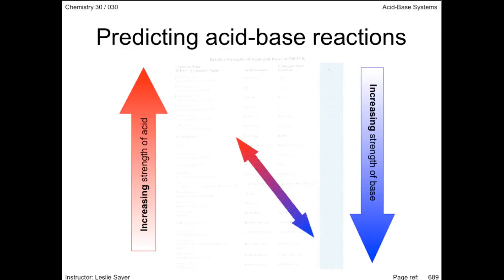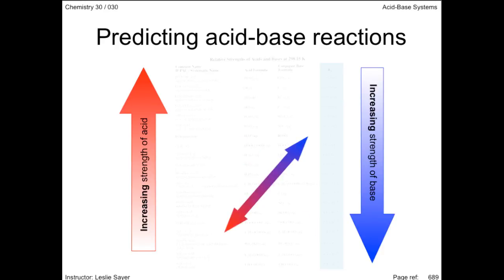A directional arrow in the top-left to bottom-right orientation indicates the acid reactant is above the base reactant and products are favored. The arrow indicating the opposite means that the acid reactant is below the base reactant and reactants are favored.